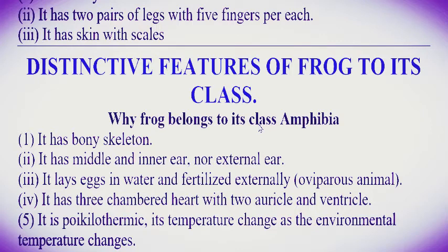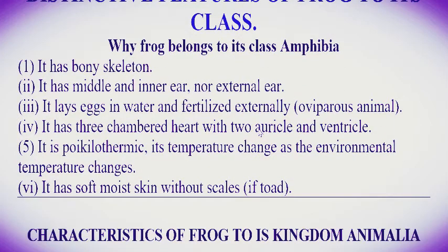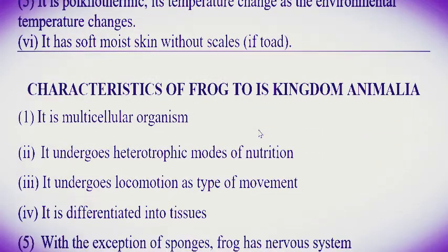Number five: it is poikilothermic, meaning its body temperature changes as the environmental temperature changes. Number six: it has soft moist skin with scars. Comparing a frog and a toad — the toad has moist soft skin, but the frog has scars.